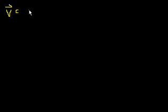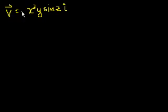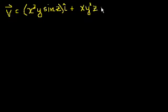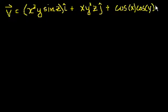We'll take the curl of a fairly fancy vector field — one that I have trouble visualizing, but that we can mathematically chug through. So let's say our vector field — I'll do a three-dimensional vector field just to do a fairly complicated example. I'm just going to make it up on the fly. So in the x direction the magnitude of the field is x squared y sine z, plus xy squared z in the j direction, and in the z direction, cosine of x times cosine of y.